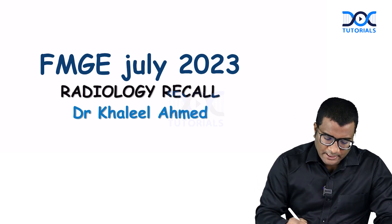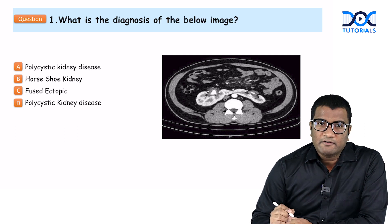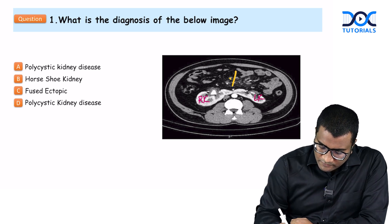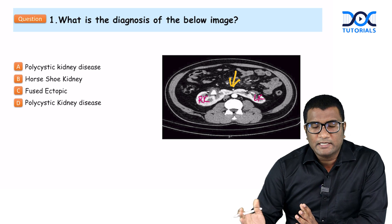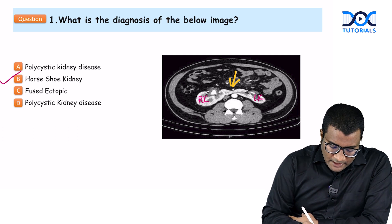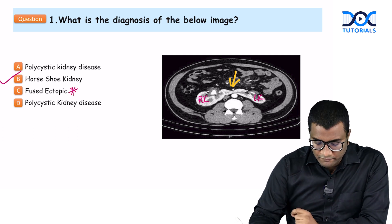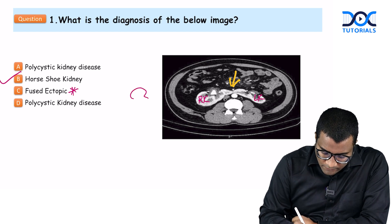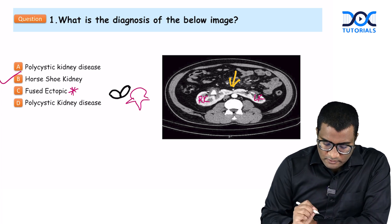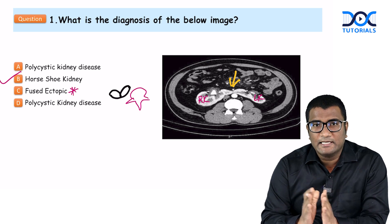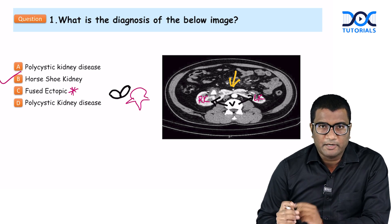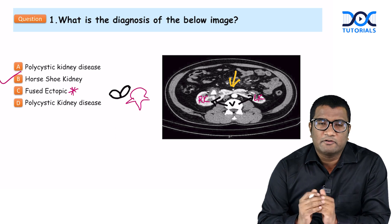The first question is a standard one: what is the diagnosis of the CT scan image given? You can see the right kidney and the left kidney, and both kidneys are fused across the midline. When both kidneys are on either side of the vertebra fused across the midline, this is a horseshoe kidney. Be careful — in fused ectopic, both kidneys are on one side of the vertebra, which is called crossed fused ectopic.